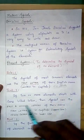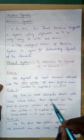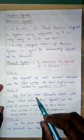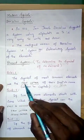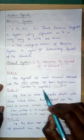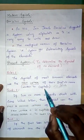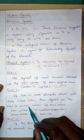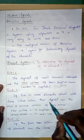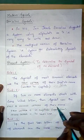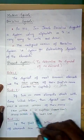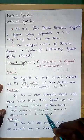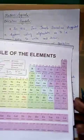Point number two: if two or more elements start with the same initial letter, then the symbol uses the first and second letters of their name. An important note I missed in point one — the first letter of a symbol is always written in capital. In point two, the first letter is written in capital or uppercase, and the second letter is written in lowercase.